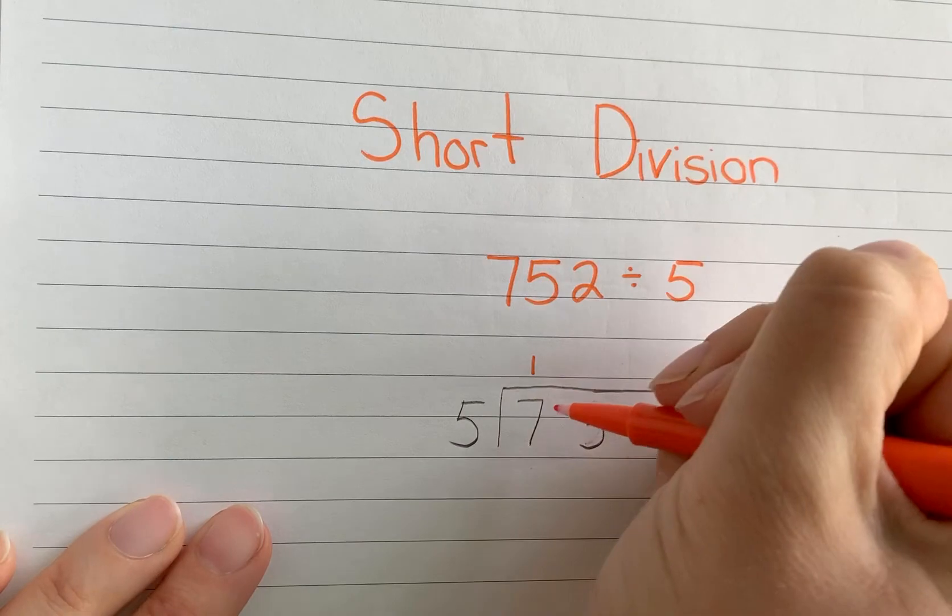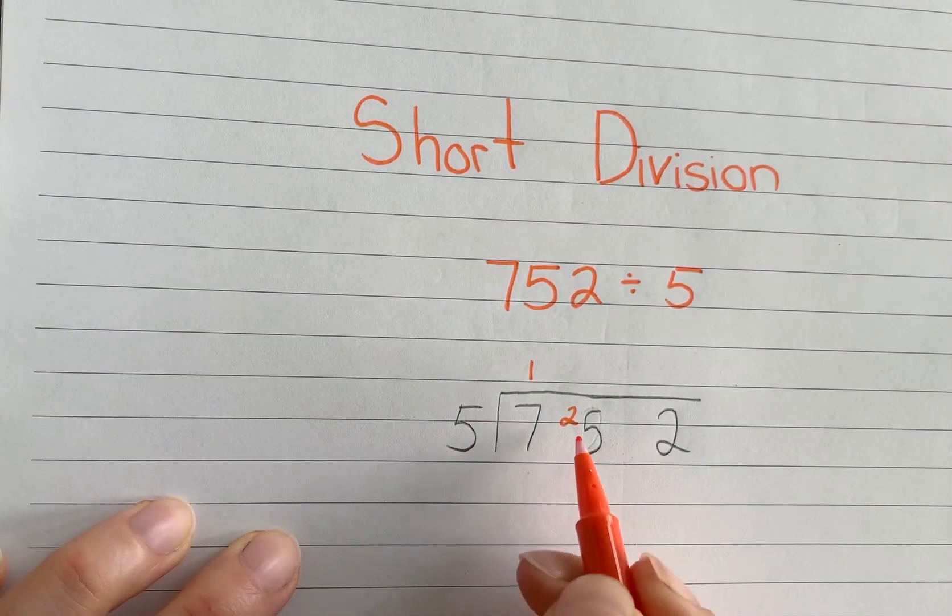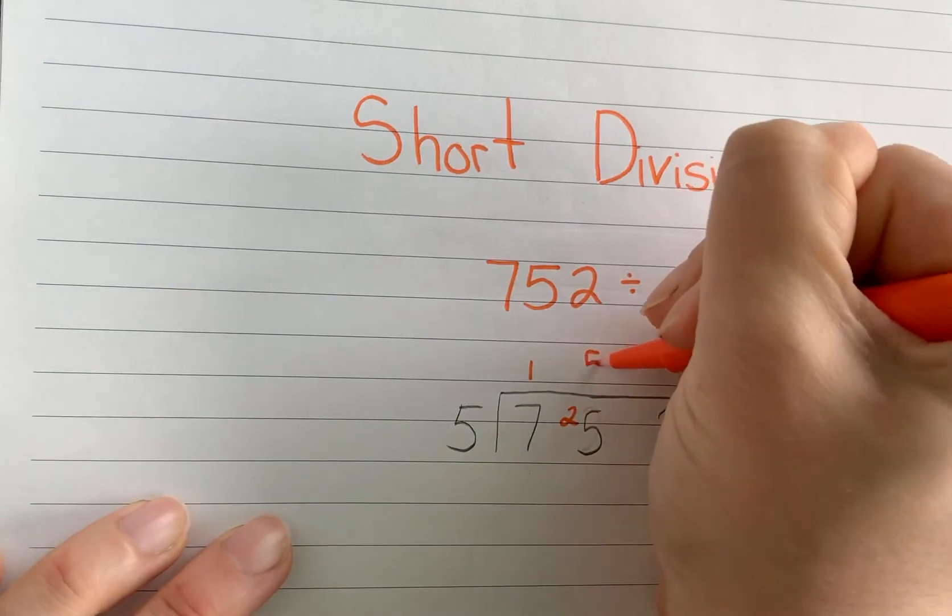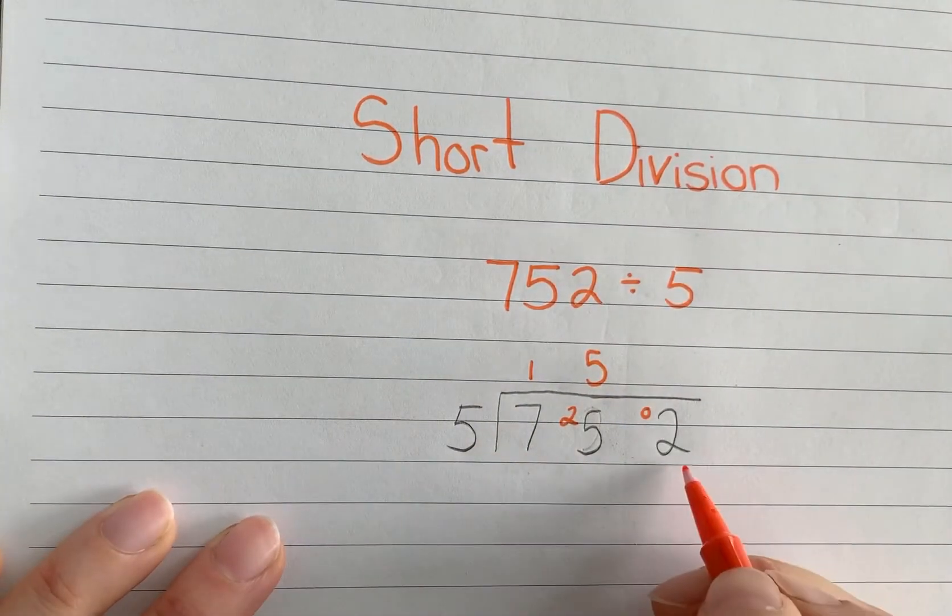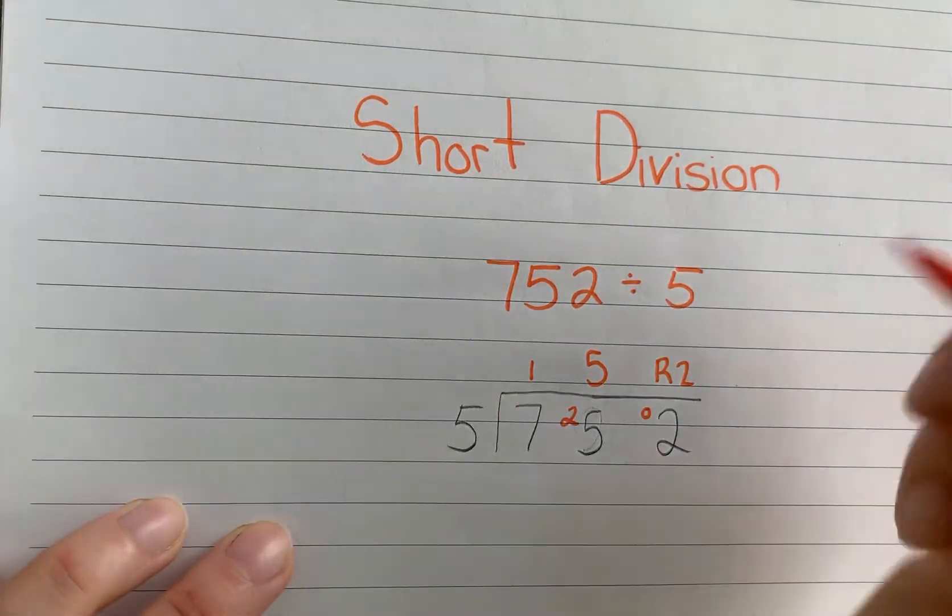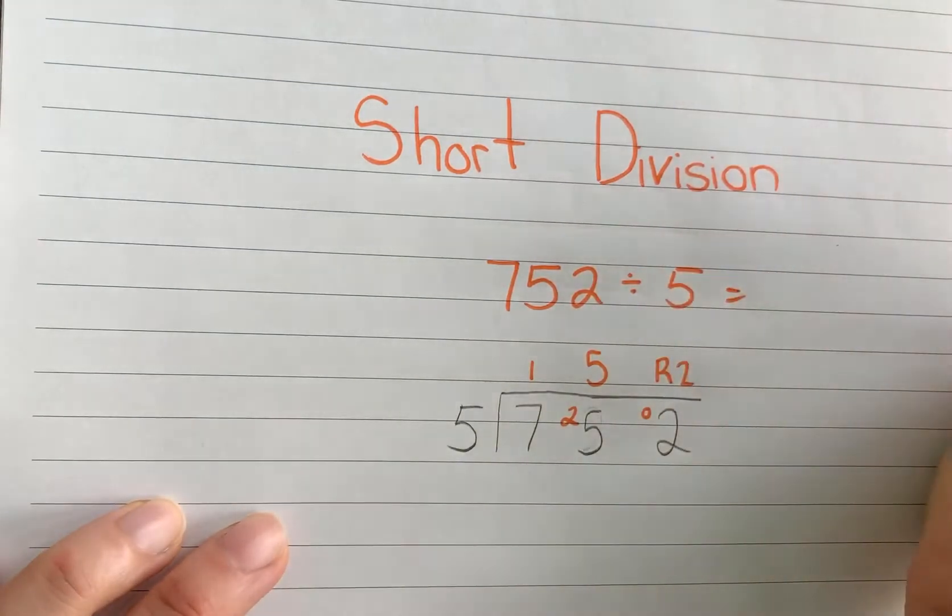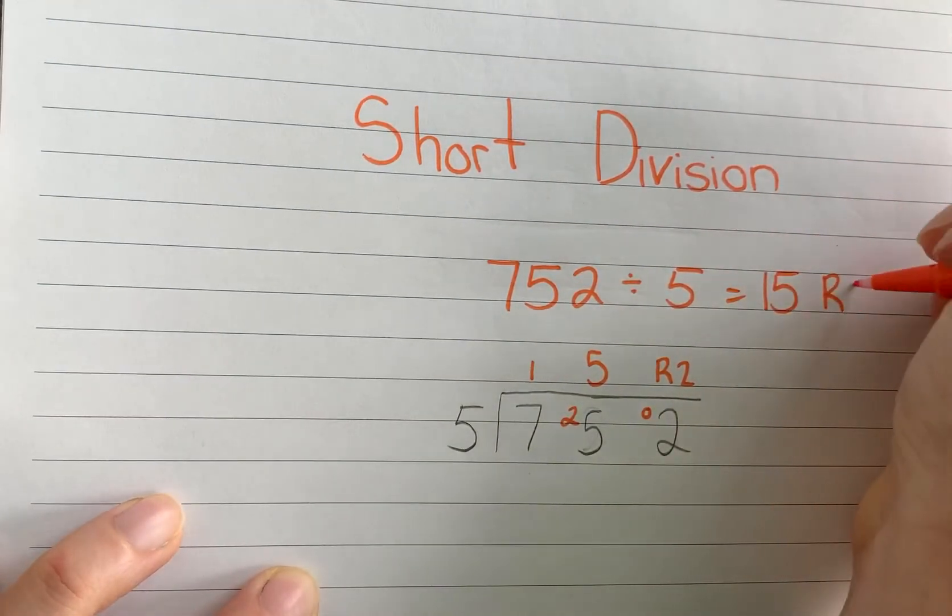5 times 1 is 5. You have 2 left over. 5 goes into 25, 5 times, you have 0 left over. 5 doesn't go into 2. So I have my remainder 2. See how quick that was? 752 divided by 5 equals 15 remainder 2. Interesting.